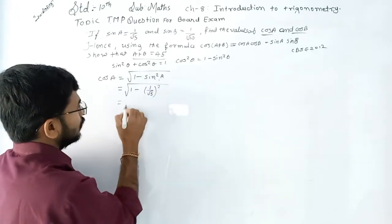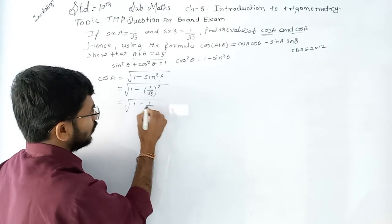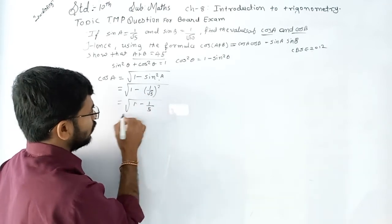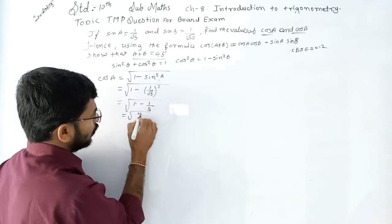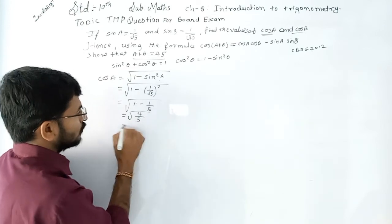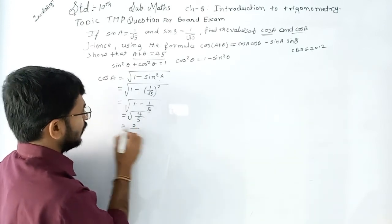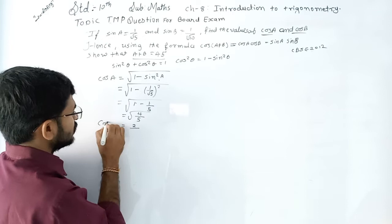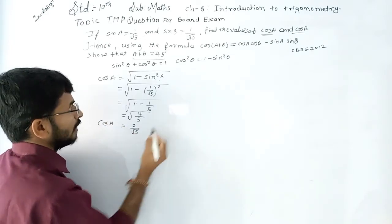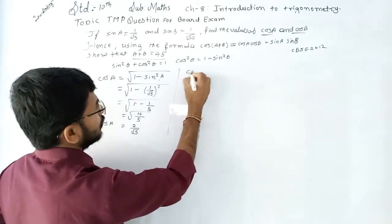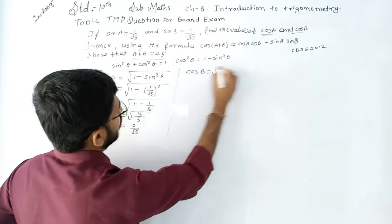Now, 1 − 1/5 = 4/5. Then the square root of 4 is 2, and the square root of 5 remains. So cos A is equal to 2 upon root 5.